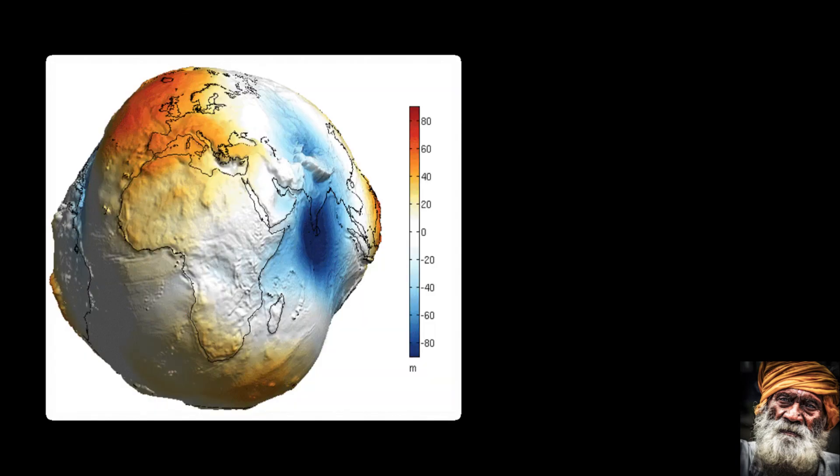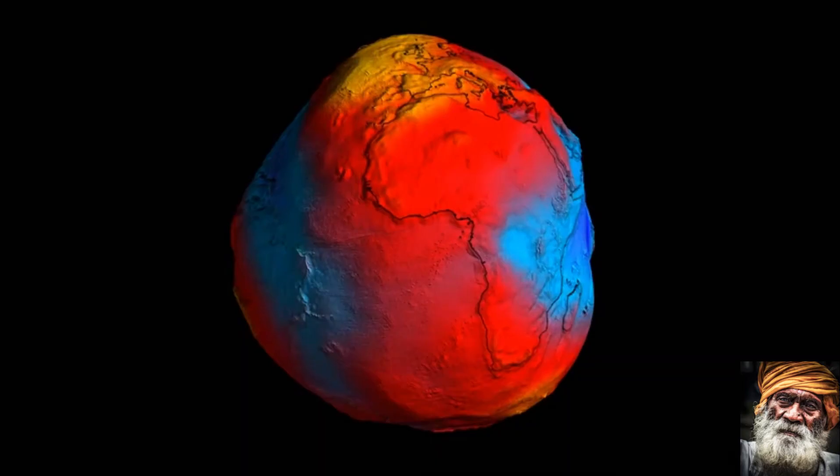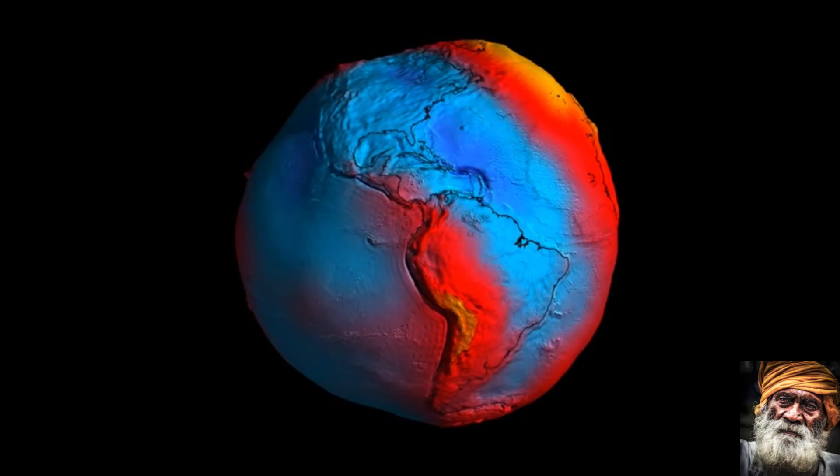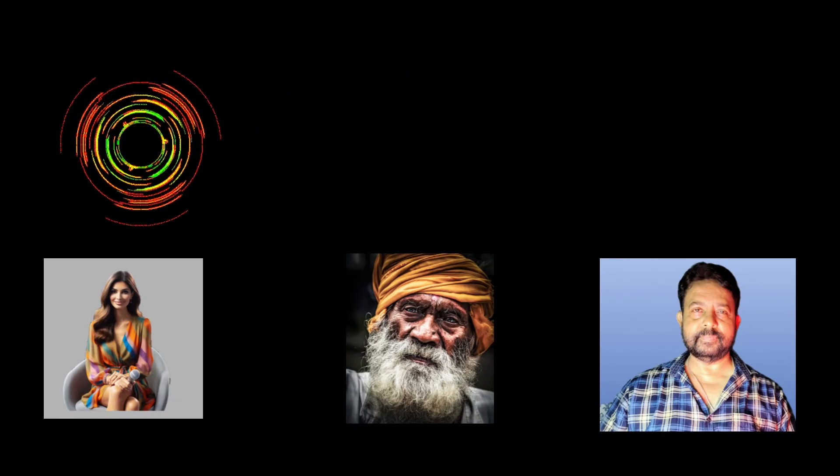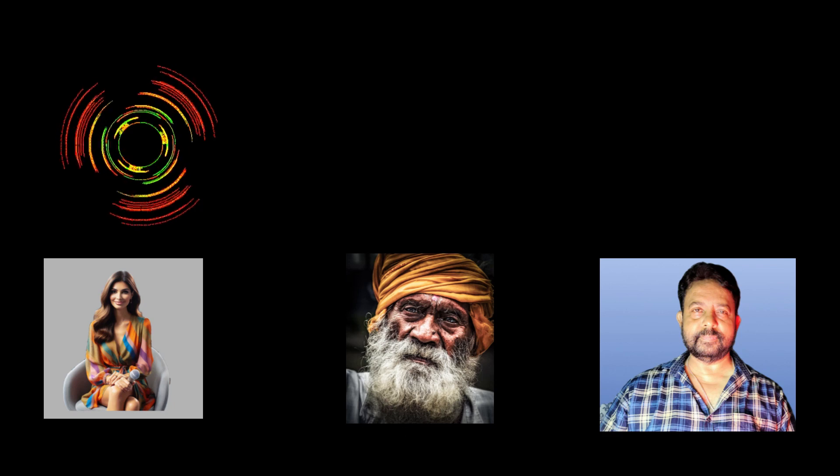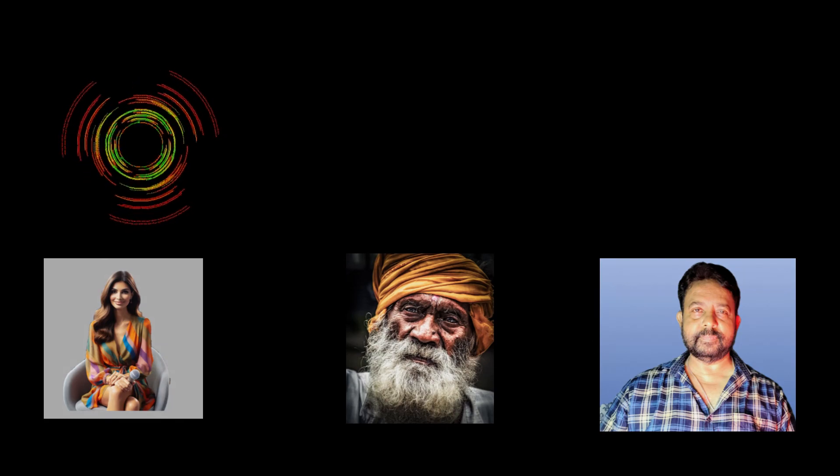So there you have it, guys. From the oblate spheroid shape of the Earth to the intricacies of datums and projection, we have covered a lot of ground today. Understanding these concepts not only help us appreciate the complexity of our planet, but also the ingenuity of the scientists and the cartographers who have worked tirelessly to map it. Thank you, Mr. Avijit, for taking us on this fascinating history. And thank you to our listeners. Tune in next time for another episode of Wanderings Through History and Science. Until then, stay curious and keep exploring.